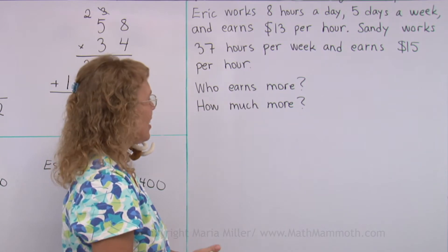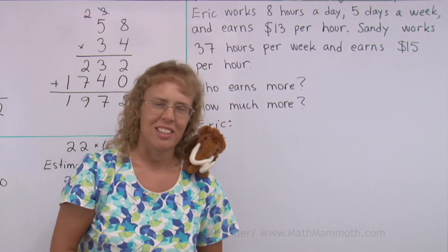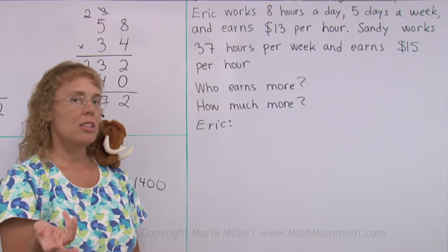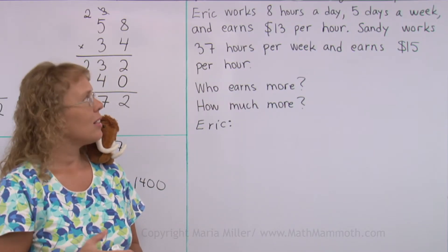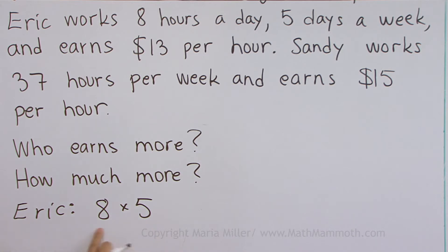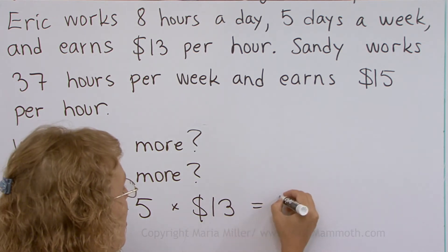Okay, Eric and Sandy. Let's just try to organize our thoughts. Eric — how much would he earn? What do you need to calculate to find out Eric's earnings in one week? He works 5 days a week and 8 hours a day, so you need to multiply 8 times 5 to get how many hours he works in a week. Then it says he earns $13 per hour, so this needs to multiply by 13. So this is 40 times 13.